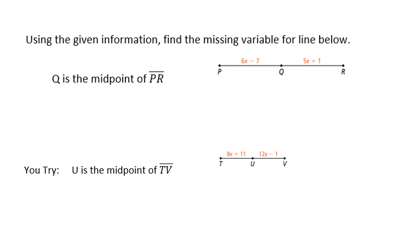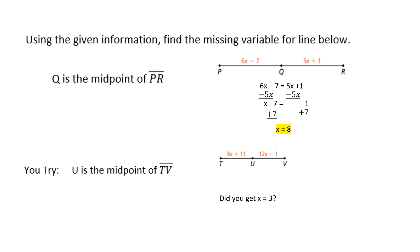Using the given information, find the missing variable. Q is the midpoint of PR, so PQ and QR are the same length. That gives the equation: 6x minus 7 equals 5x plus 1. Subtracting 5x from both sides gives x minus 7 equals 1. Adding 7 gives x equals 8. For the next diagram, U is the midpoint of TV — pause and find x. Did you get x equals 3? If you have questions, make sure you bring them to class. See you soon.